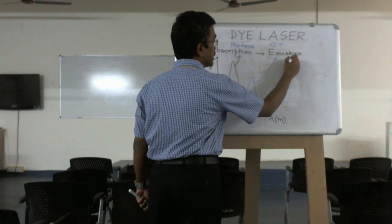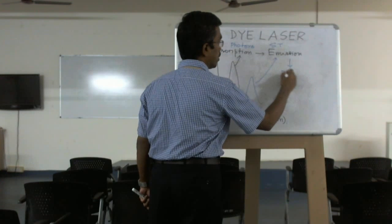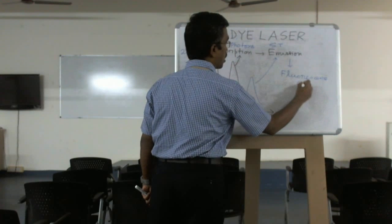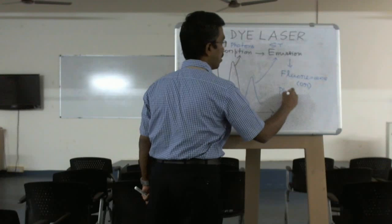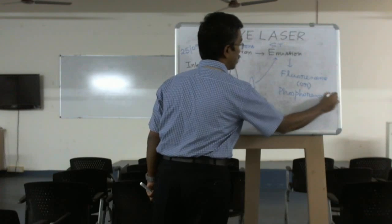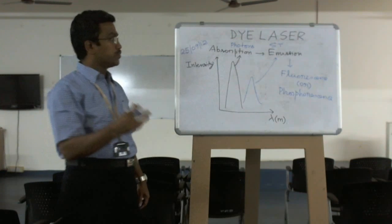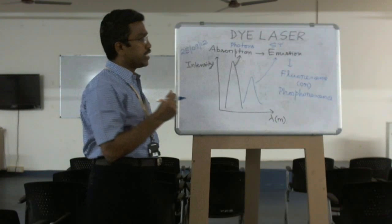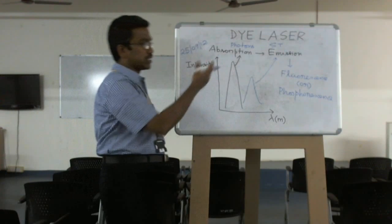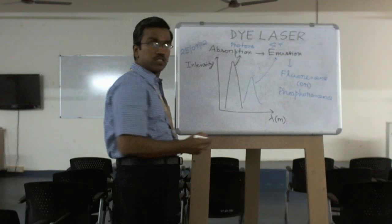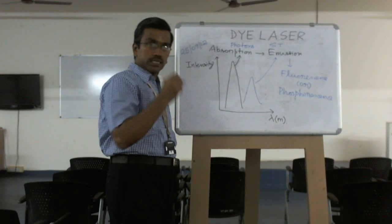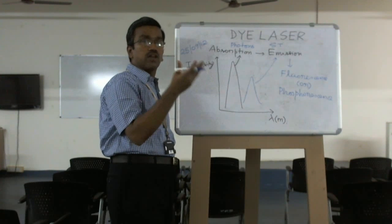Here absorption takes place by photons and emission also by stimulated emission. Here two types of emission that we can call: one is called fluorescence or phosphorescence. So absorption of photons, emission by two ways, that is luminescence. The luminescence means emission of light. There are two types of luminescence: one is called fluorescence, another one is called phosphorescence. What is known by fluorescence? Whenever light falls on a material, then and there it emits light. That is called fluorescence.